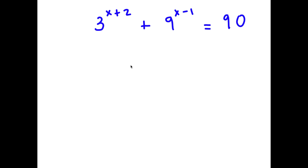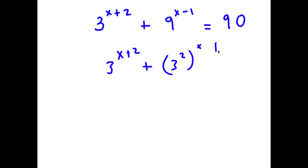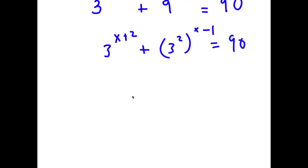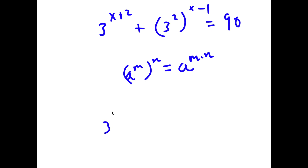In this problem I have 3 to the power of x plus 2, plus 9 to the power of x minus 1, is equal to 90. To solve this, I'm going to first rewrite 9 as 3 to the power of 2. So now I have 3 to the power of x plus 2, plus 3 to the power of 2 to the power of x minus 1, equals 90. Applying the power rule gives 2 times x minus 1, which is 2x minus 2.